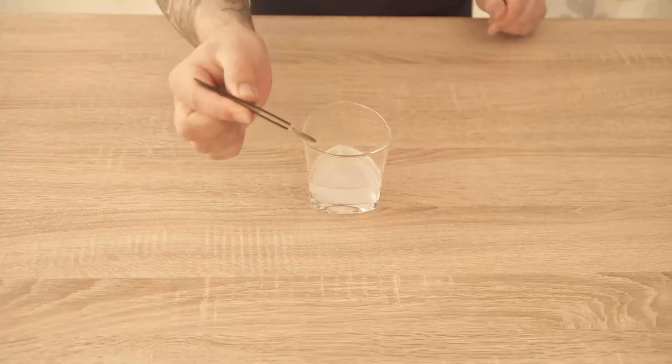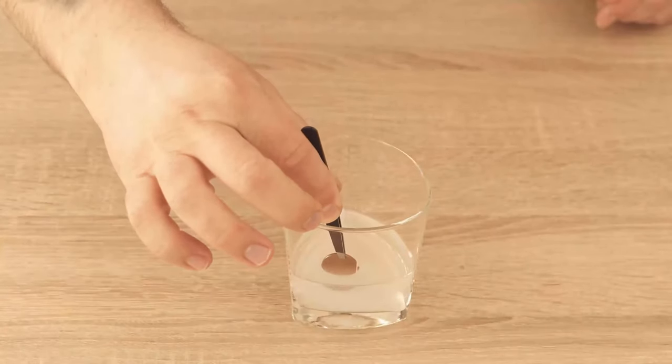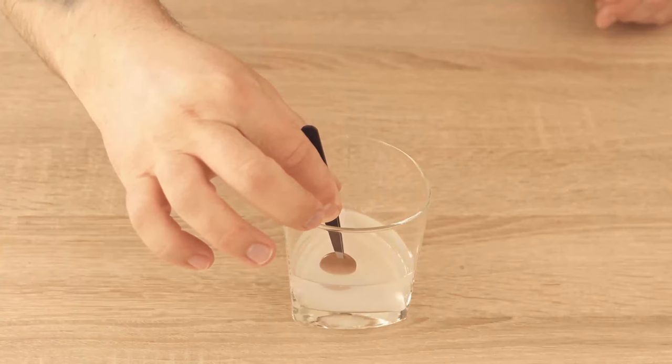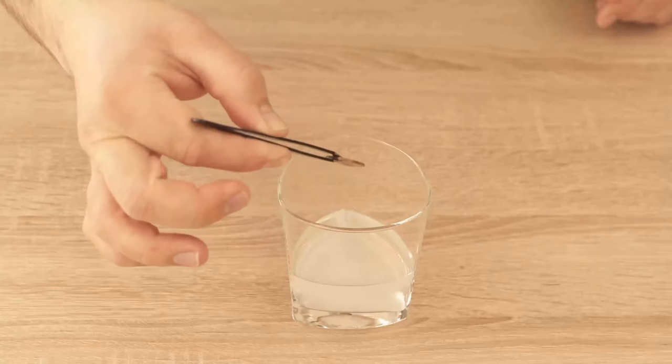Now take a tweezer to hold your coin while you dip it in the vinegar salt solution. After you've put the coin in the liquid you will see a clear difference after a few seconds.